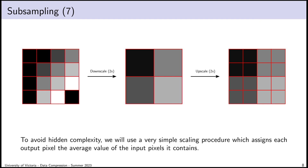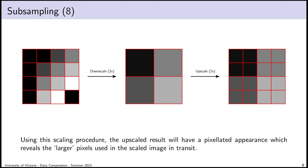Our upscaled result will have a pixelated appearance — blocks of 2×2 pixels corresponding to the large pixels in the intermediate representation. The procedure I'm describing subjects only the red and blue planes to this scaling. Green is sent exactly as-is. The decompressor receives green at full resolution, and when it recombines, there will be some pixelation, but it won't be absolute because the green channel isn't subject to scaling.